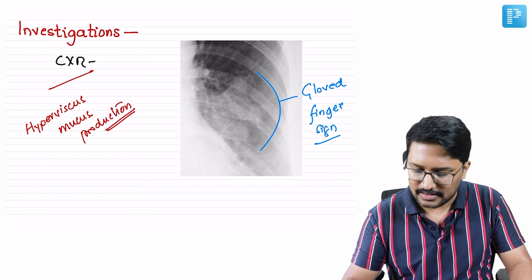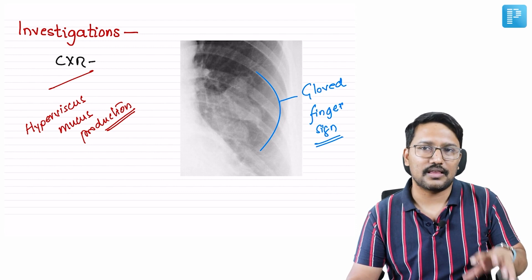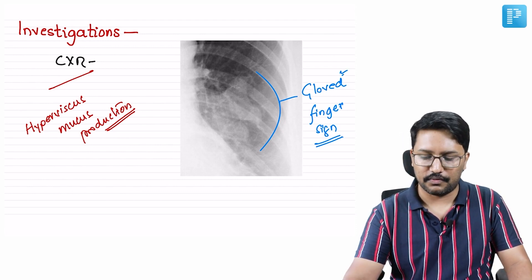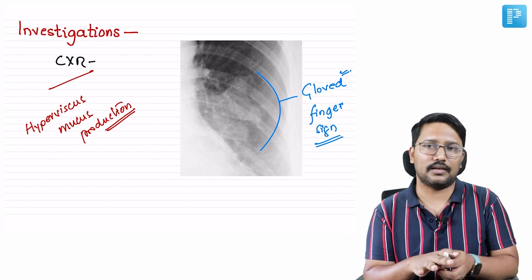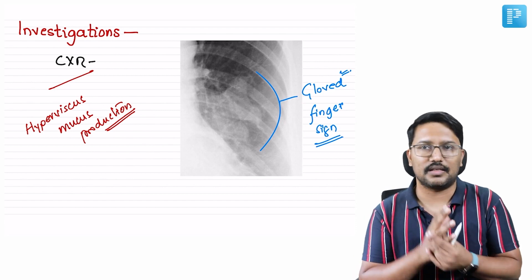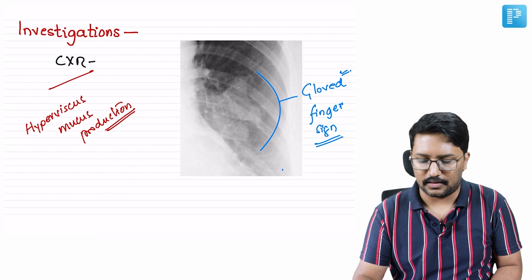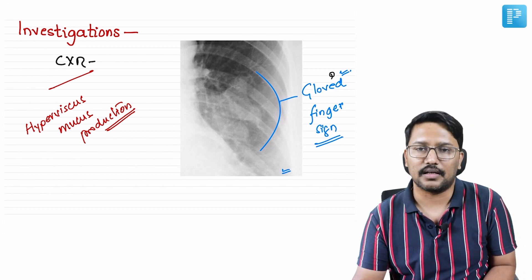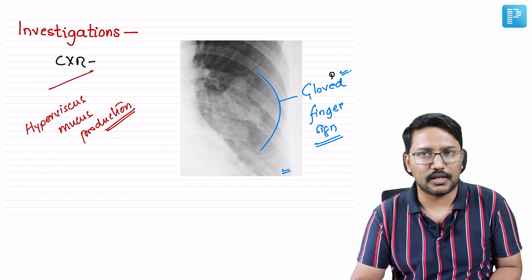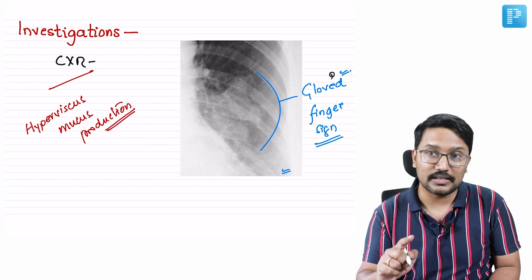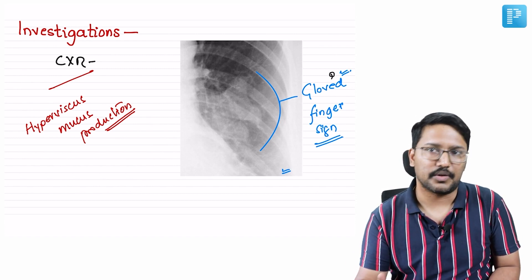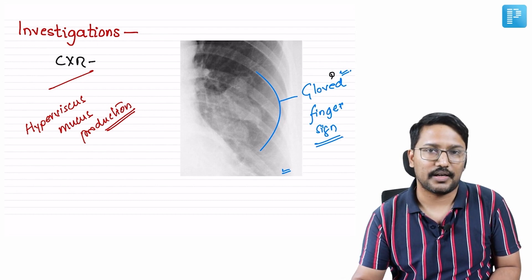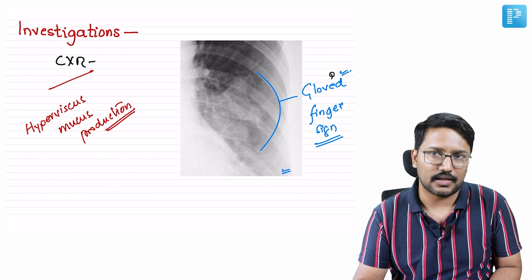The gloved finger sign is because of the deposition of thick, viscid mucus into the airway — the bronchial tree looks as if fingers are placed in a glove. Directly in MCQs, they may ask where you see the gloved finger sign: it is seen in allergic bronchopulmonary aspergillosis. It is not seen in invasive aspergillosis, chronic pulmonary aspergillosis, or aspergilloma.